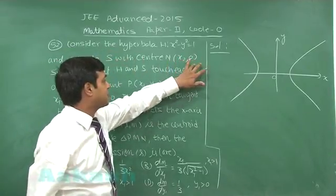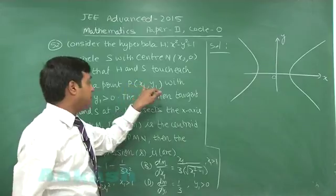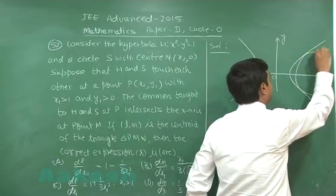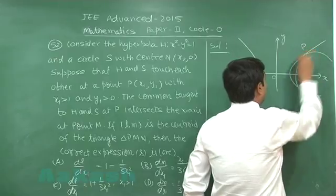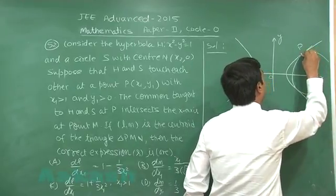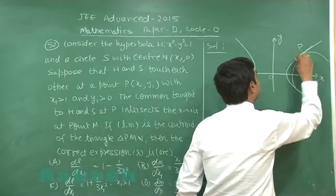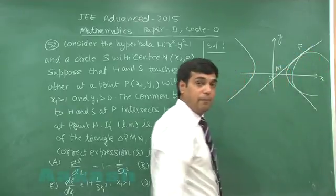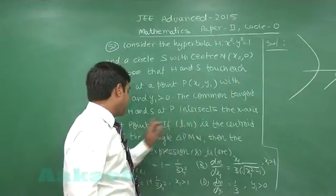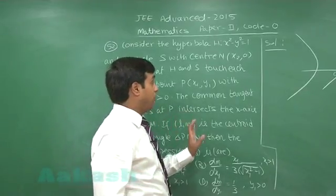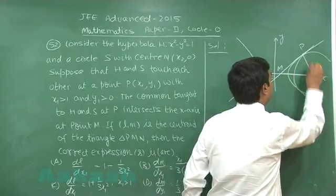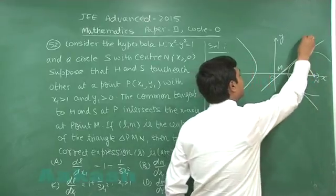The circle has its center on the x-axis at (x₂, 0) and touches the hyperbola at point P in the first quadrant. We can draw the configuration: point P is on the hyperbola, O is the origin. The common tangent to the circle and hyperbola intersects the x-axis at point M. The center of the circle is N, and we are considering the centroid of triangle PMN. Let point P be (x₁, y₁) as given.